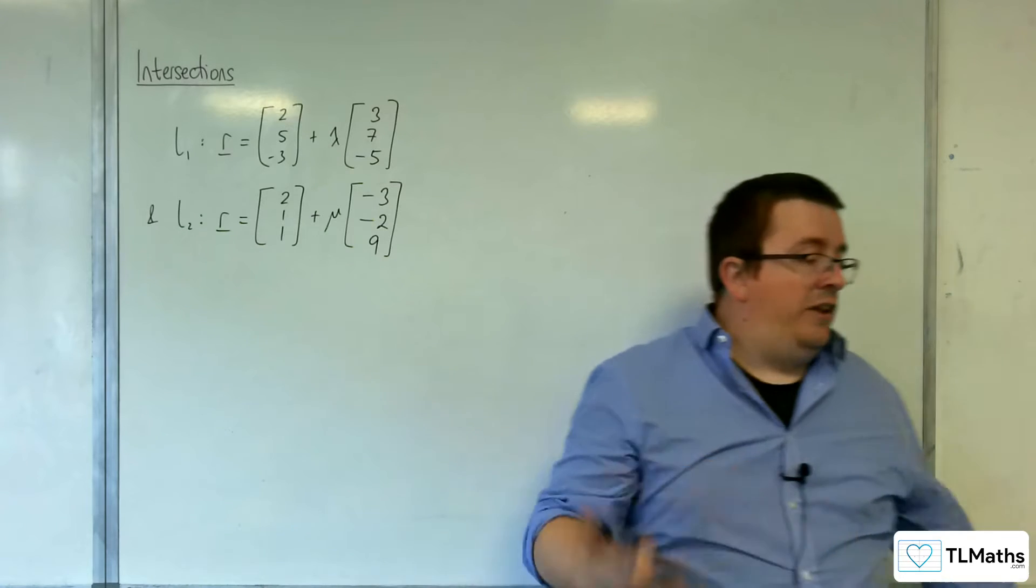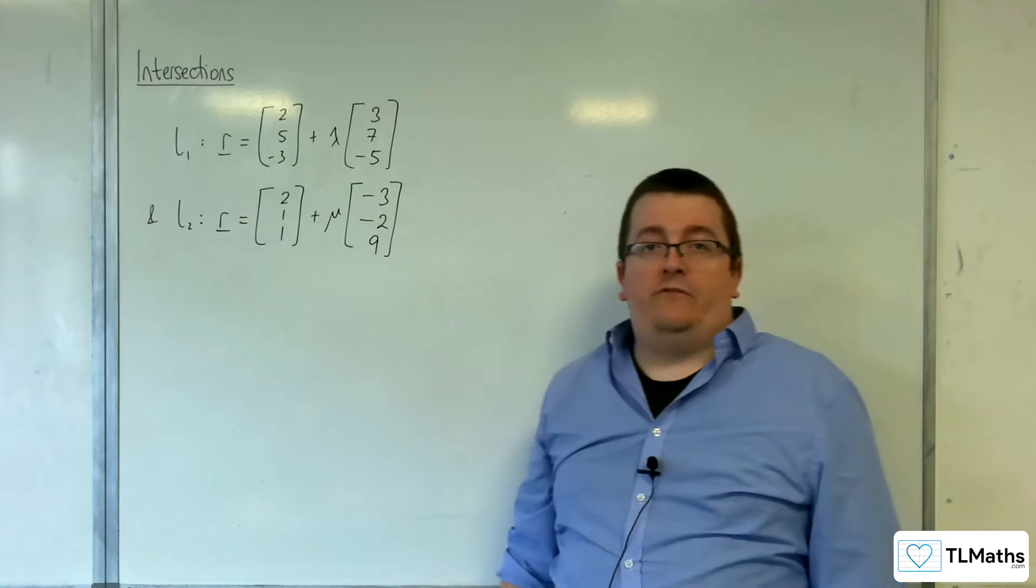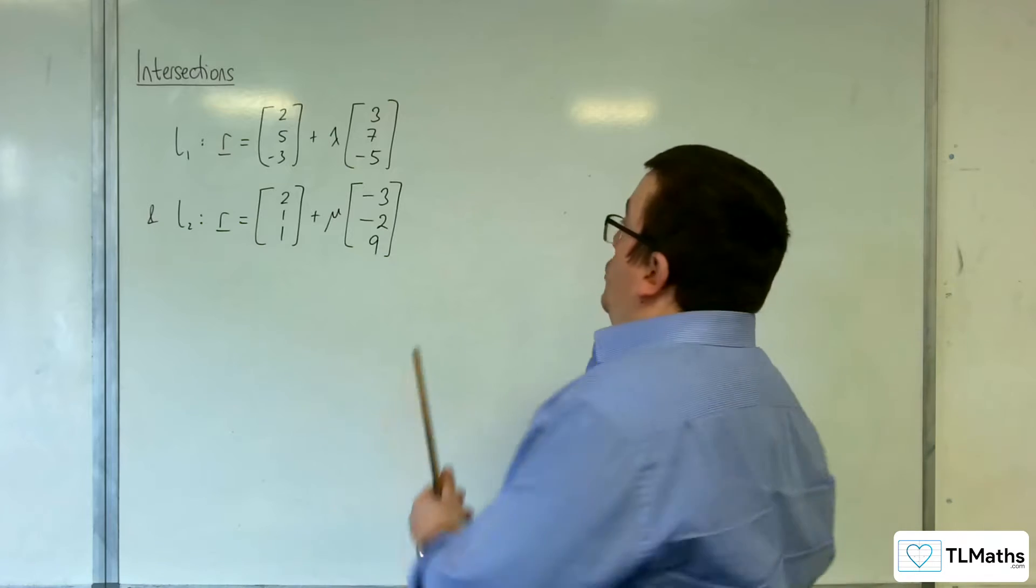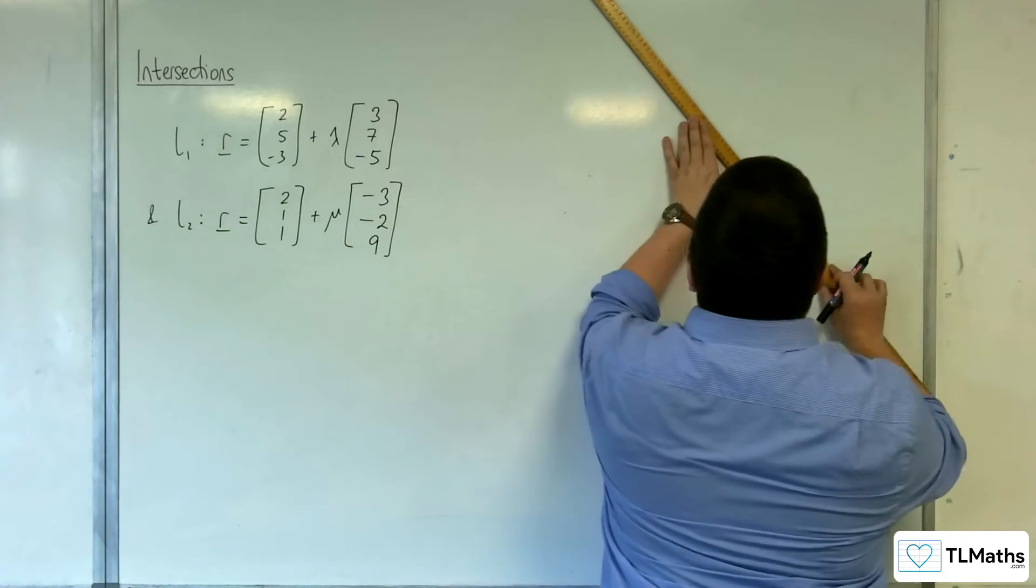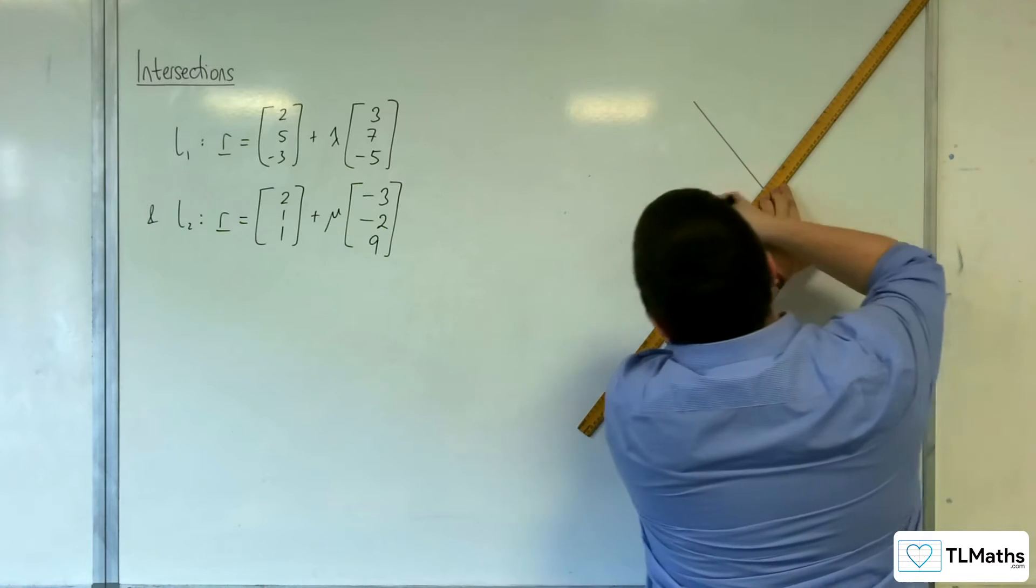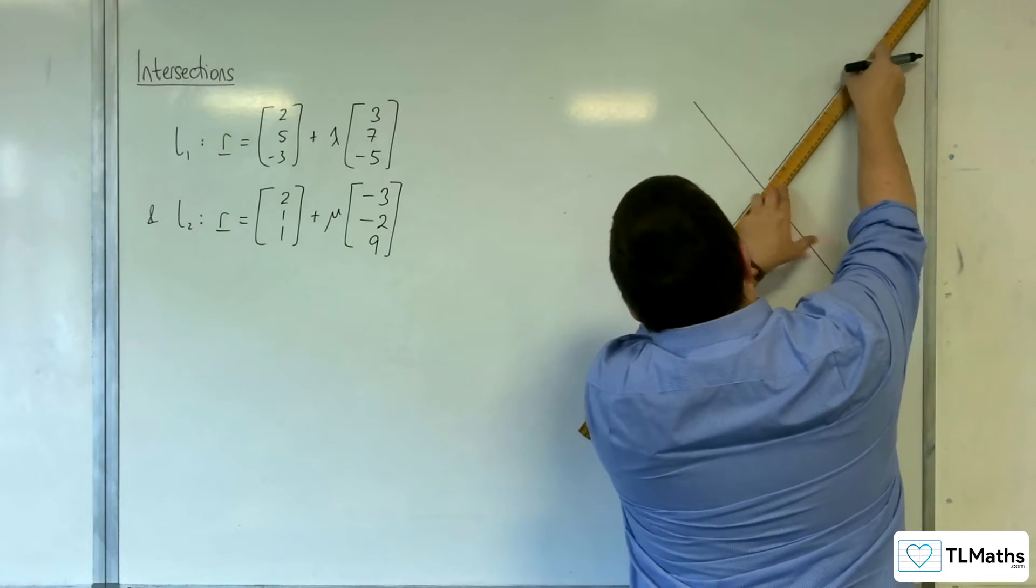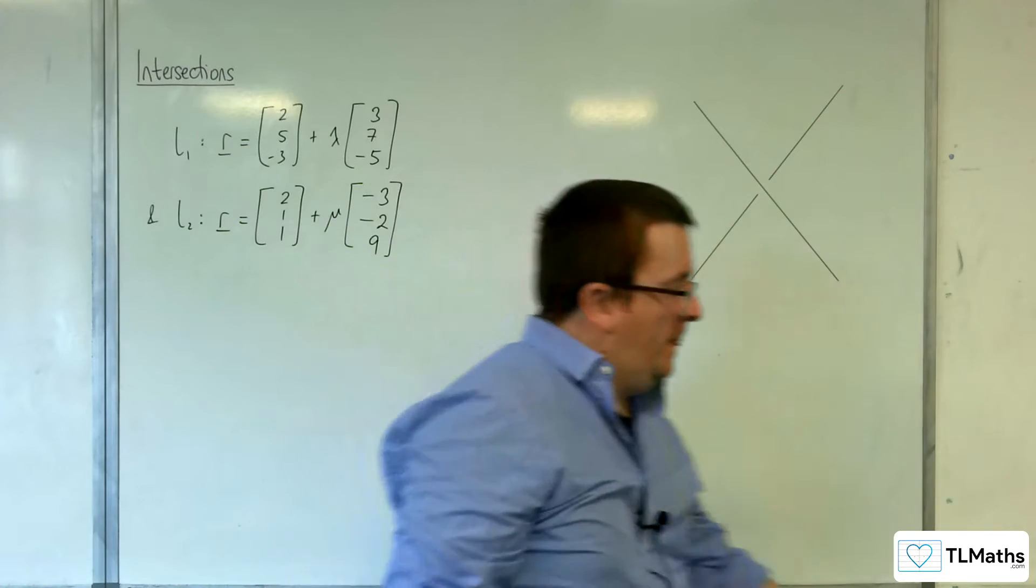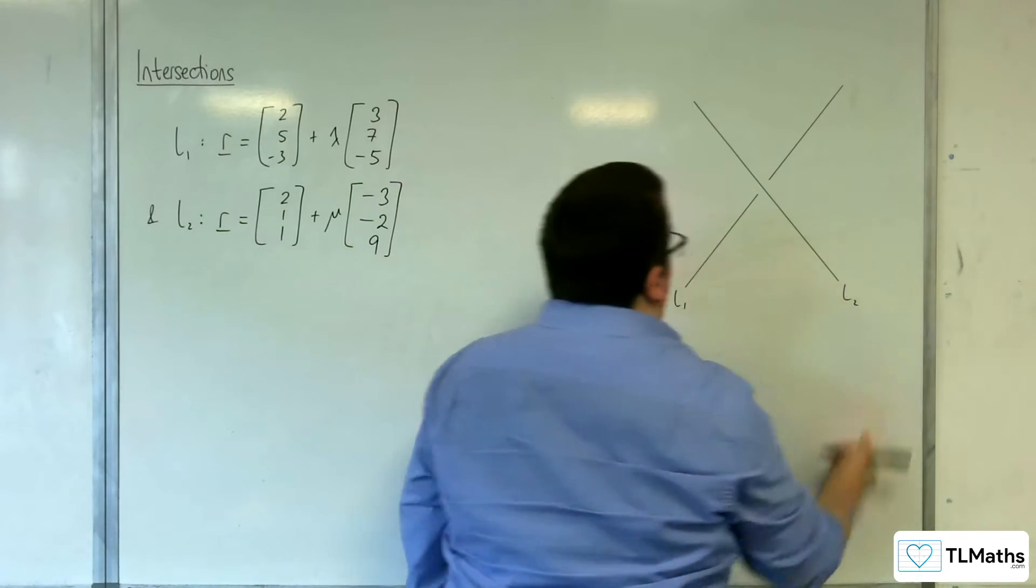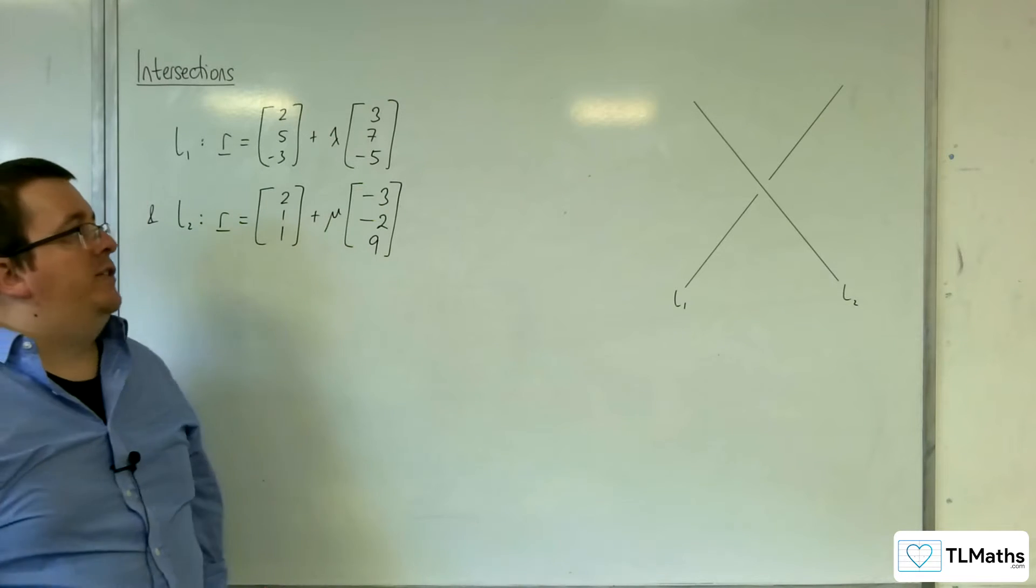Now, if this was 2D and the gradients are different, then yes, they are definitely going to intersect. However, in three dimensions, that is definitely not a given. So because I've just come up with these numbers off the top of my head, the likelihood of these two lines intersecting is quite unlikely.